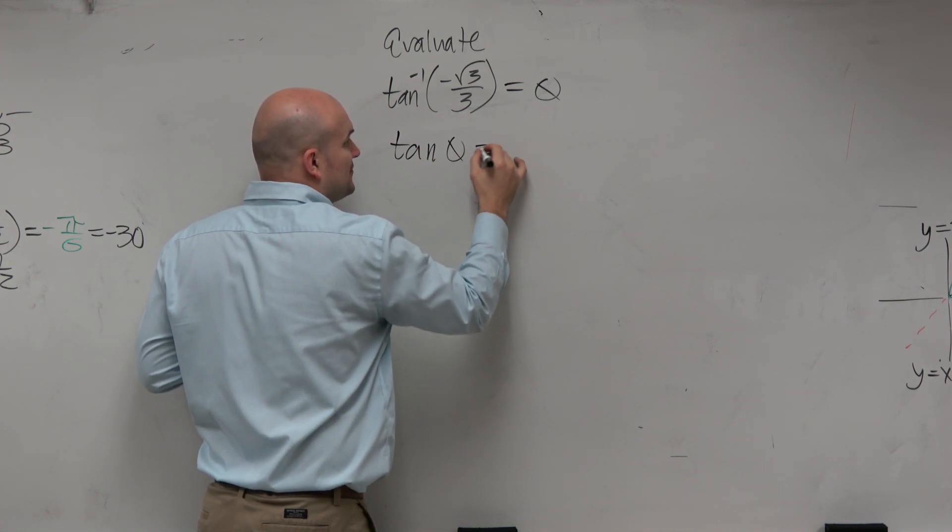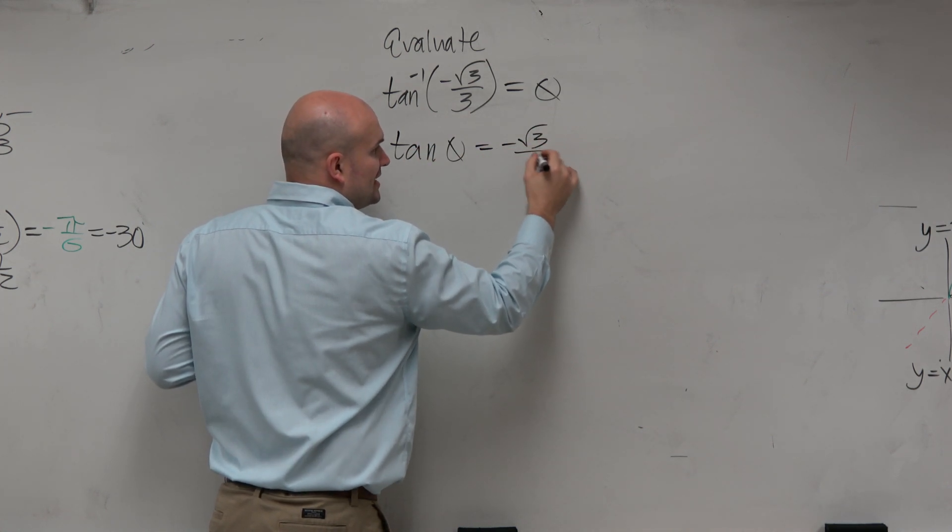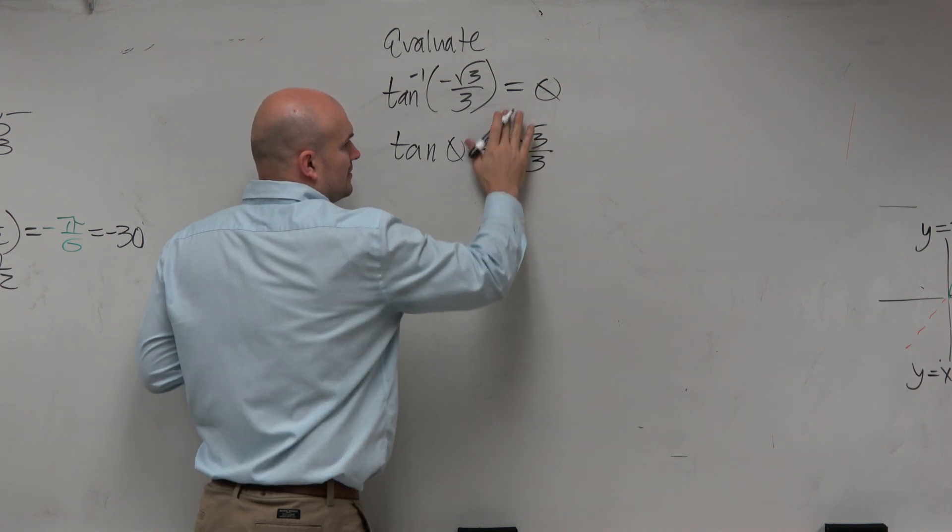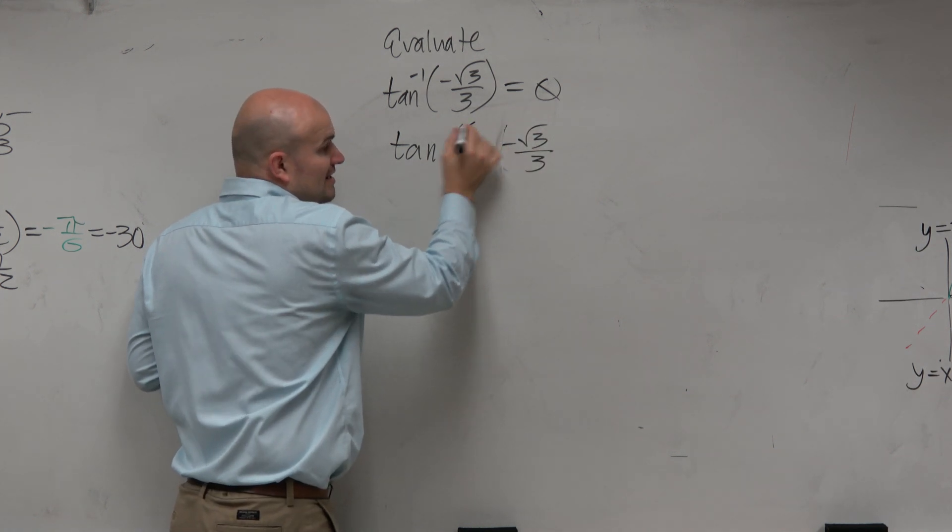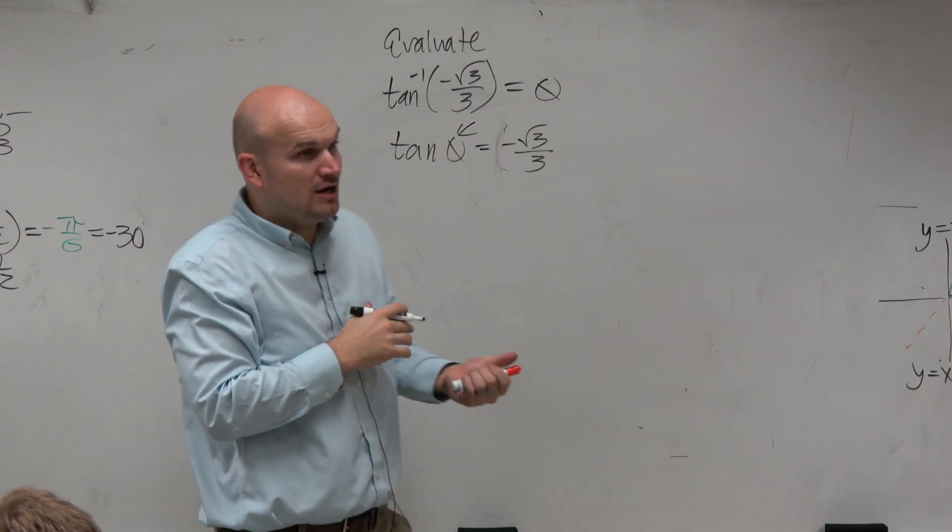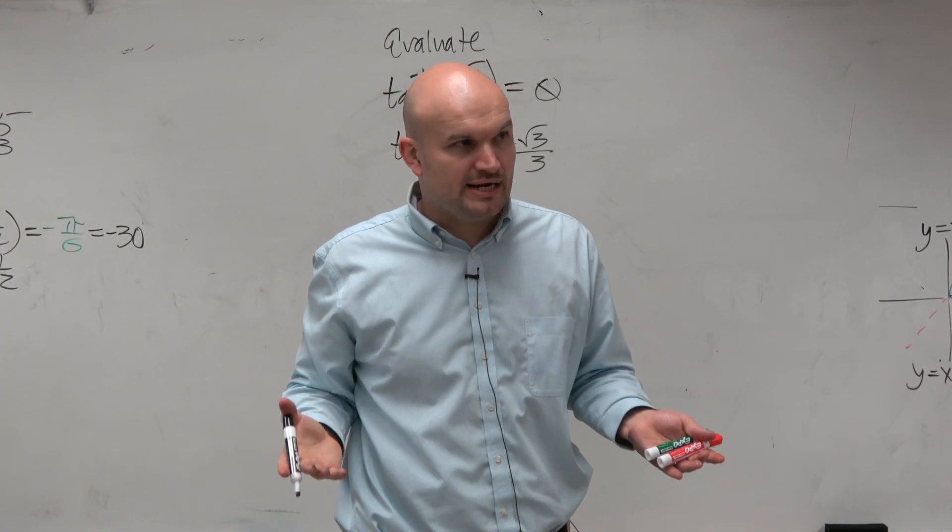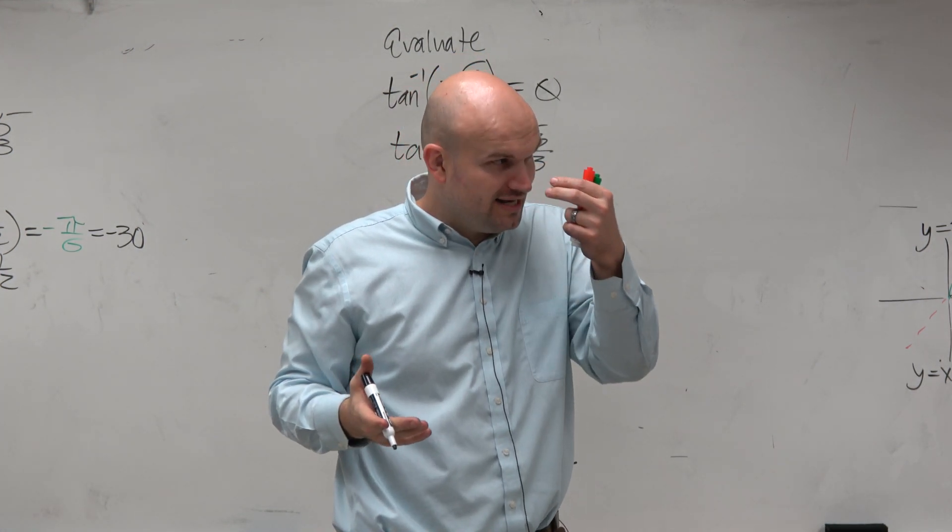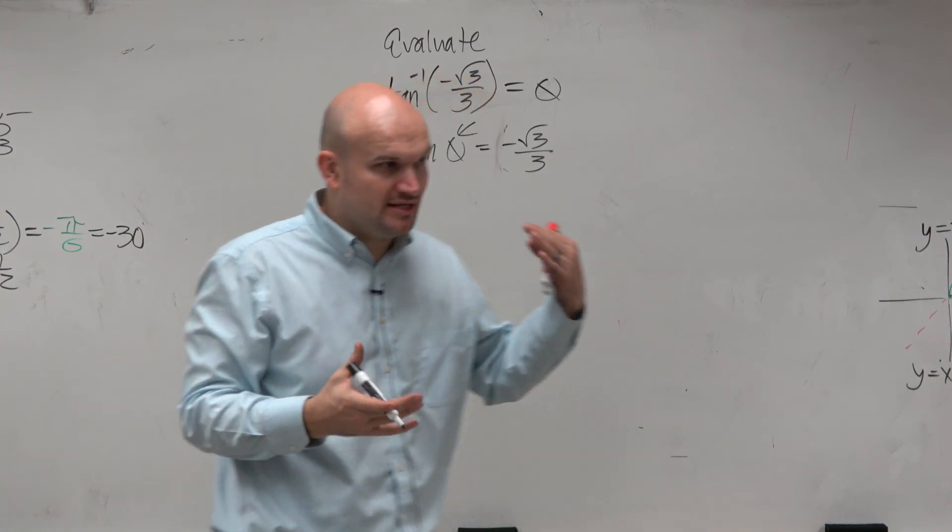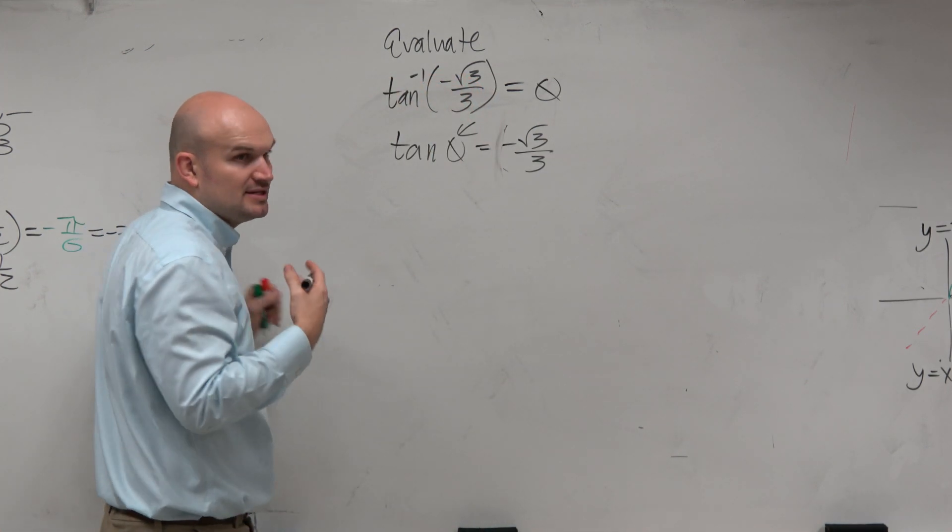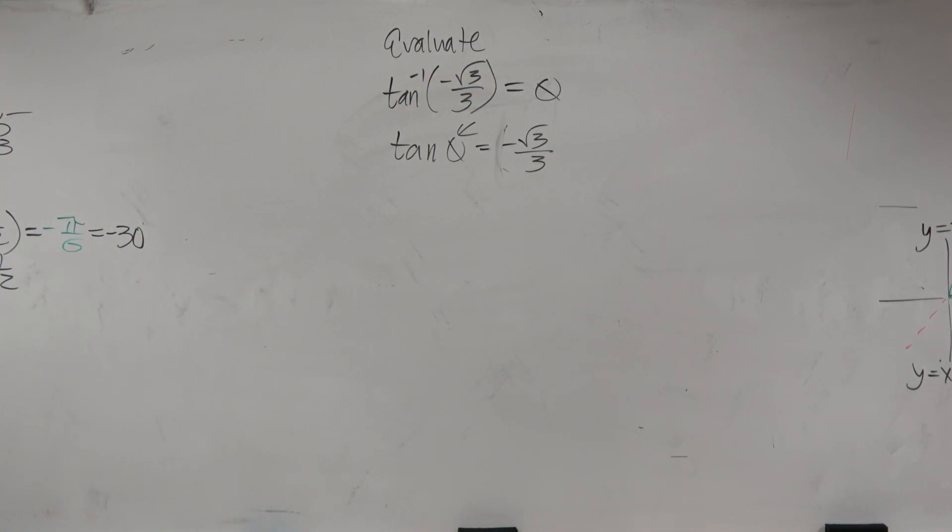This comes from what we did over there. Tangent of some angle theta equals negative square root of 3 over 3. So here's what we're trying to find. Now we've got to figure out, well, the tangent of what angle gives us square root of 3 over 3. Now, if you're not very strong with the unit circle, then this probably doesn't come very easy to you.